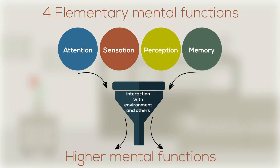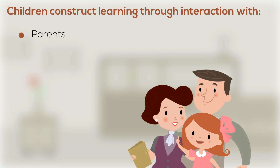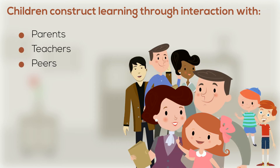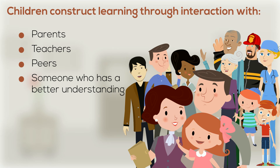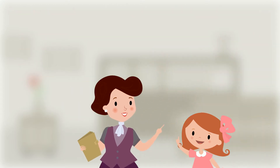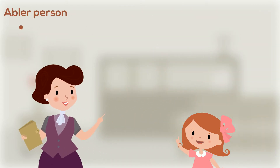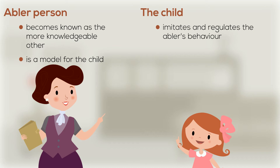An underlying theory is that children generally construct their learning through interaction with their parents, teachers, peers, or someone who has a better understanding than the learner themselves — basically, with anyone who has a higher ability level than them. This abler person becomes known as the more knowledgeable other, a model for the child to imitate and regulate their behavior and develop language competence.